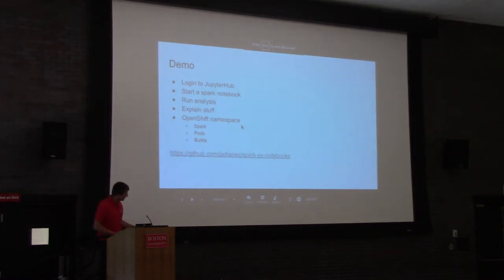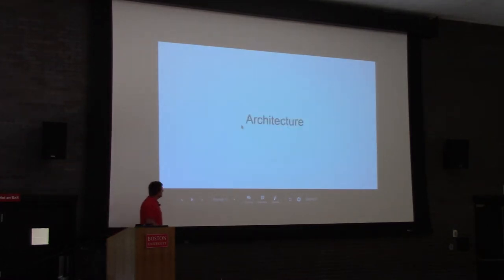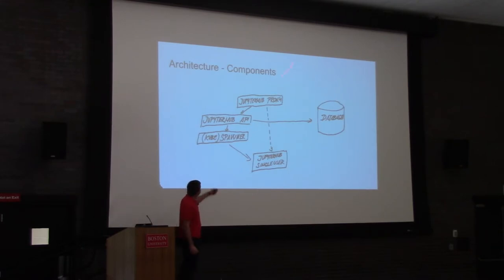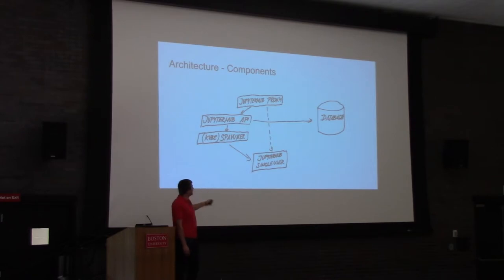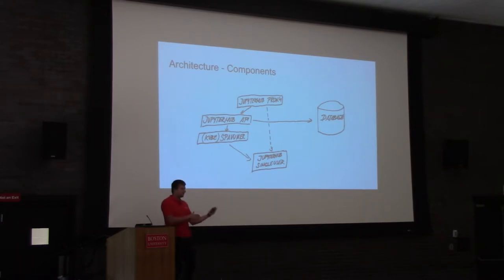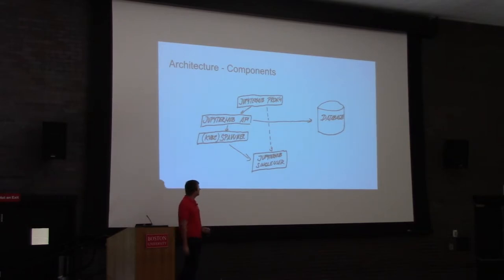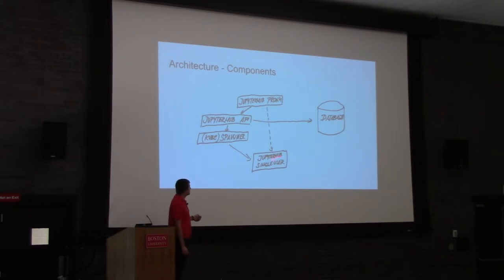About the architecture of JupyterHub: the entry point where you access as a user is JupyterHub proxy, which routes either to the JupyterHub API or your server that you started. There is something called a spawner, which takes care of spawning those notebooks per user. We use KubeSpawner — as the name suggests, it's a spawner that works with Kubernetes. It generates the pod definition and submits it to OpenShift. There is also a database for tracking users and started notebooks so that it doesn't disappear on restart.